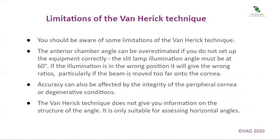You should be aware of some limitations of the Van Herrick technique. The anterior chamber angle can be overestimated if you do not set up the equipment correctly. The slit lamp illumination angle must be at 60 degrees. If the illumination is in the wrong position, it will give the wrong ratios, particularly if the beam is moved too far onto the cornea. Accuracy can also be affected by the integrity of the peripheral cornea or degenerative conditions. The Van Herrick technique does not give you information on the structure of the angle and is only suitable for assessing horizontal angles.